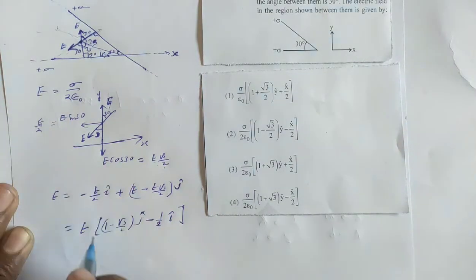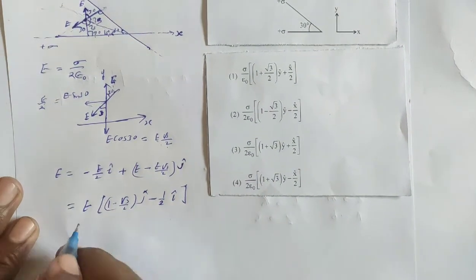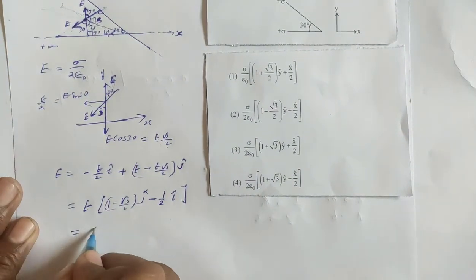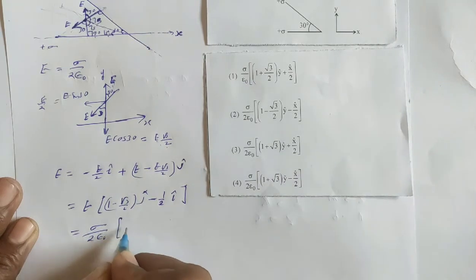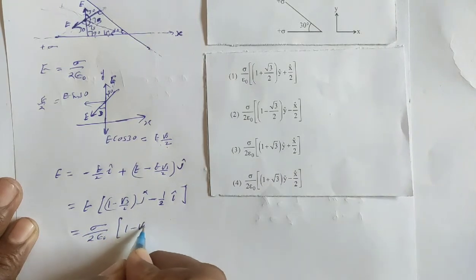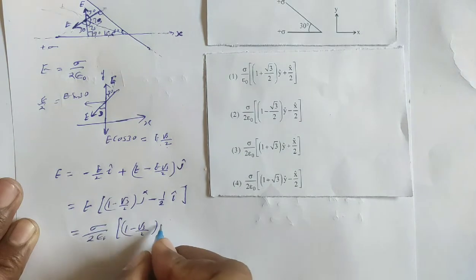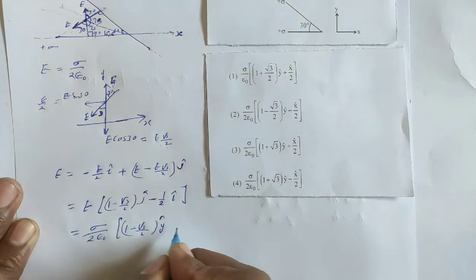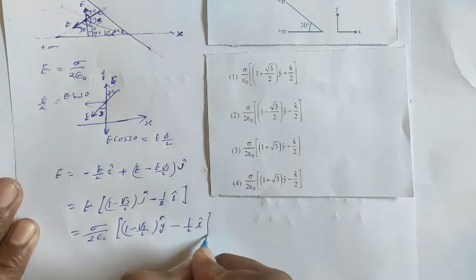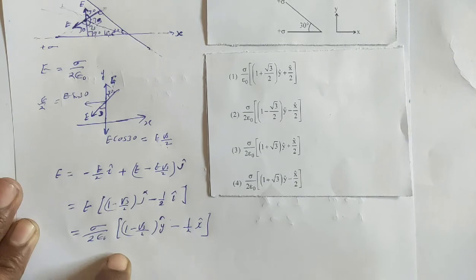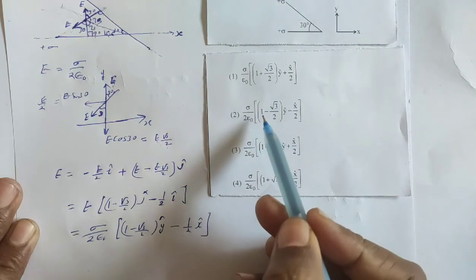Substituting E = sigma / 2 epsilon-naught, the net electric field is (sigma / 2 epsilon-naught) times [(1 minus root 3 over 2) ŷ-cap minus (1/2) x̂-cap]. The answer matches — note they have called ĵ-cap as ŷ-cap and î-cap as x̂-cap. Answer confirmed.